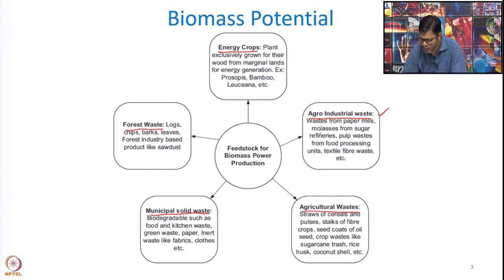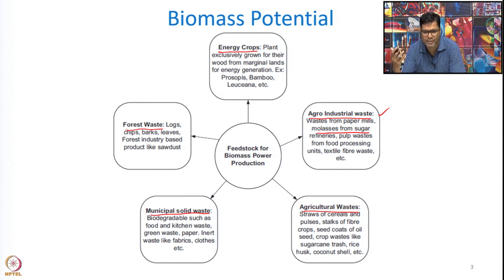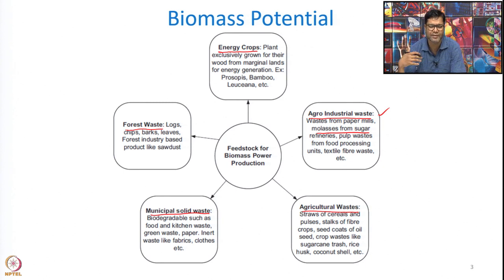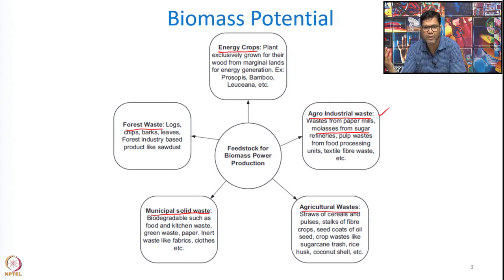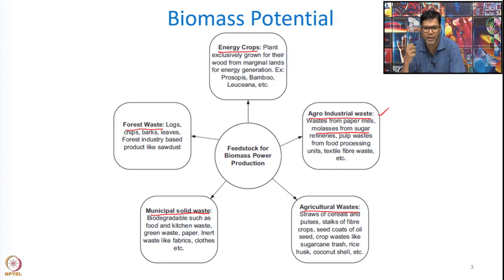For example, sugar cane juice is converted into sugar, but there is a lot of byproduct — molasses — which is predominantly used for bioethanol production. These wastes or byproducts from industries using agro-products can be used for energy recovery or chemical recovery. In this module we will discuss how we can recover hydrogen from this waste biomass.